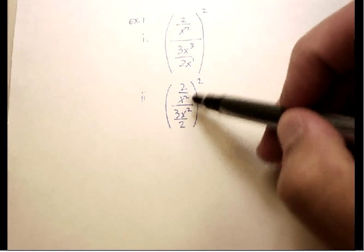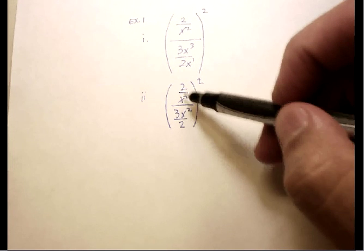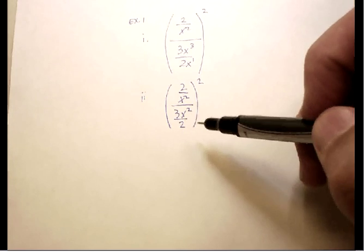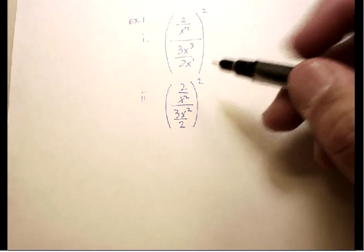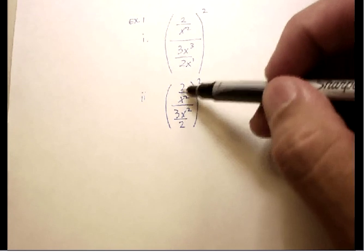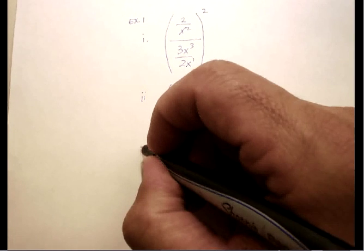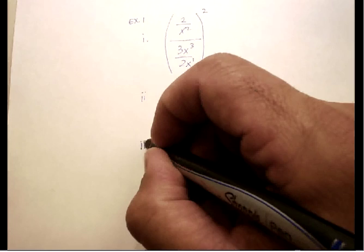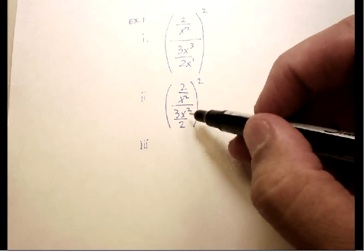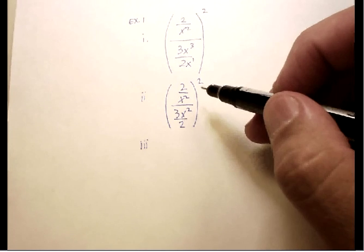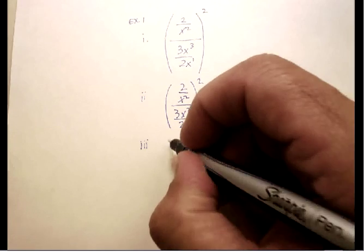I might be tempted to cross those out, but I can't because that's in a denominator and that's in a numerator. But I'm noticing there's a fraction divided by a fraction here. If you remember algebra 1, whenever you have a fraction divided by a fraction, you can multiply by the reciprocal. That's what I'm going to do.